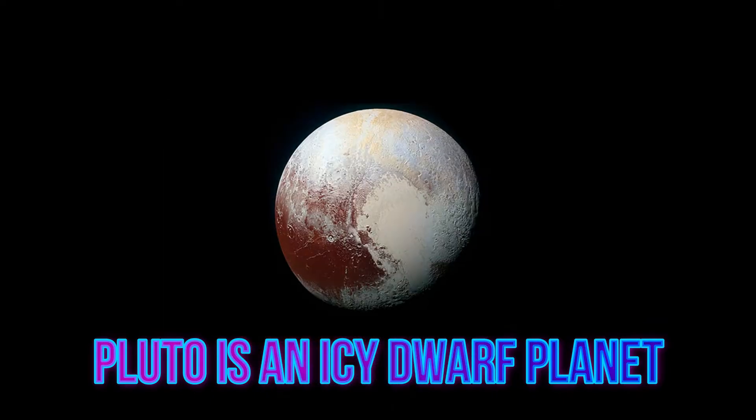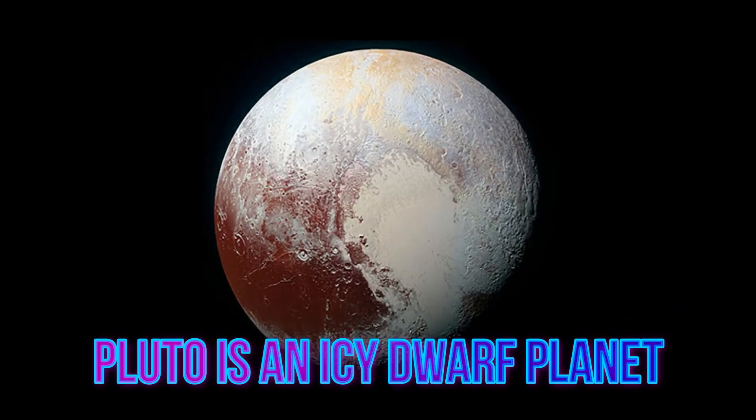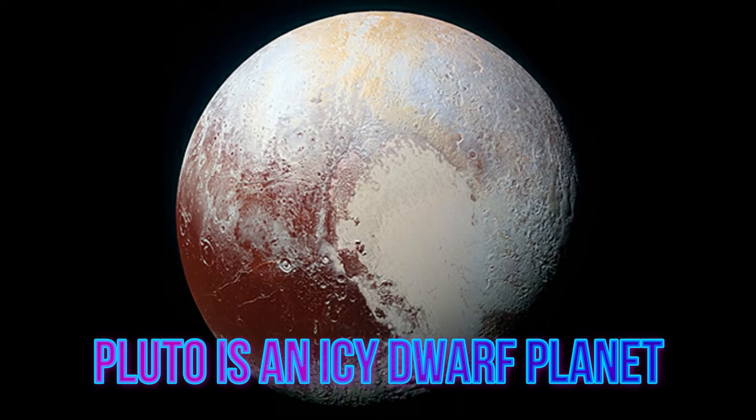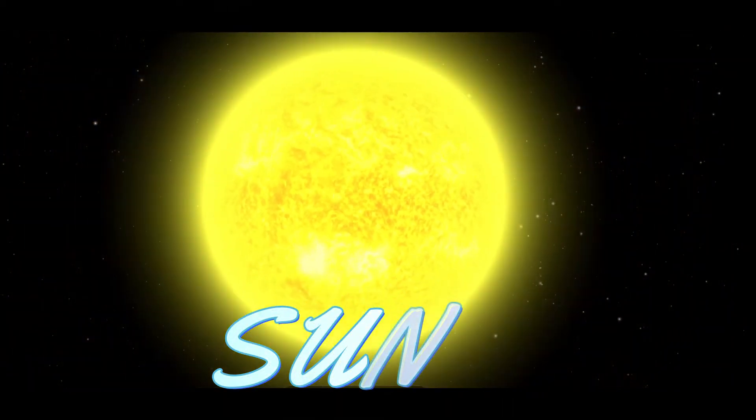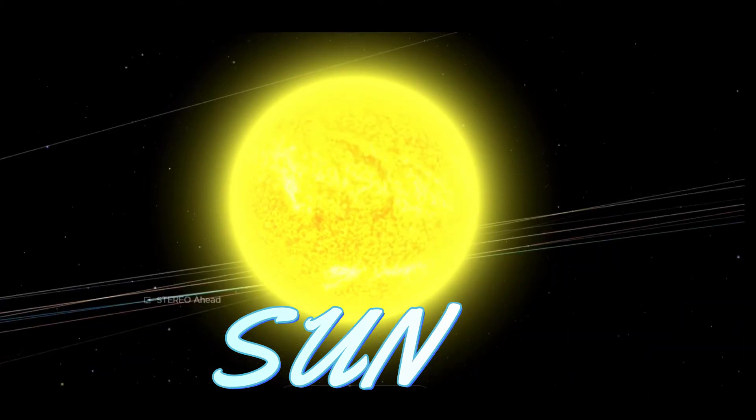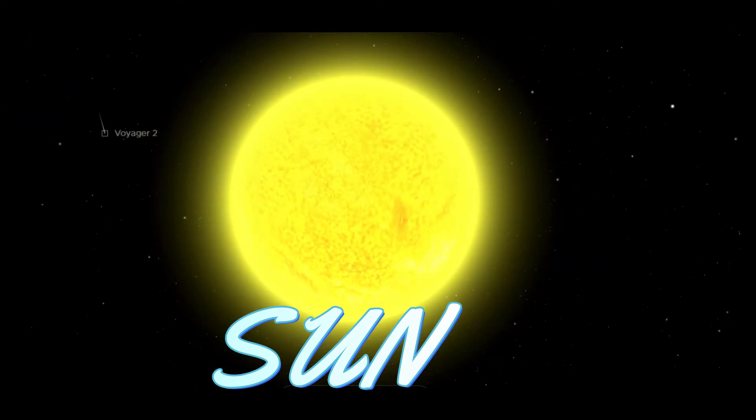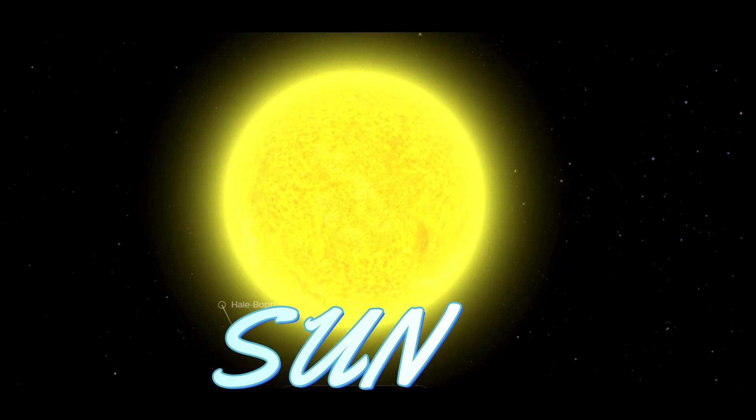But now Pluto is taken away from the solar system because it's now considered a dwarf planet. The Sun is a yellow dwarf with its magnificent color that appears yellow and gold.